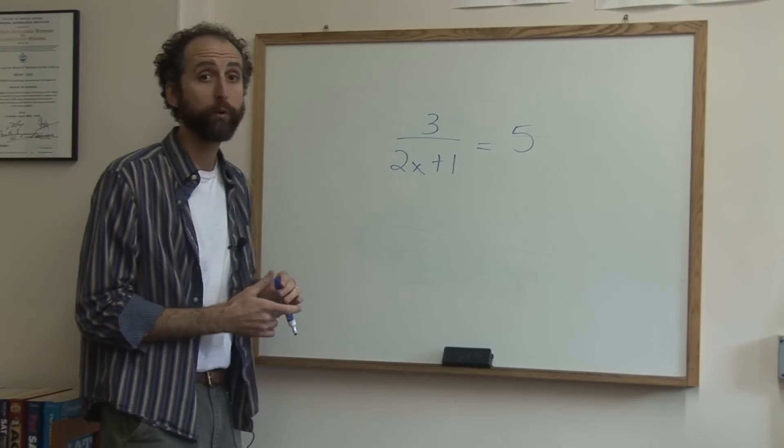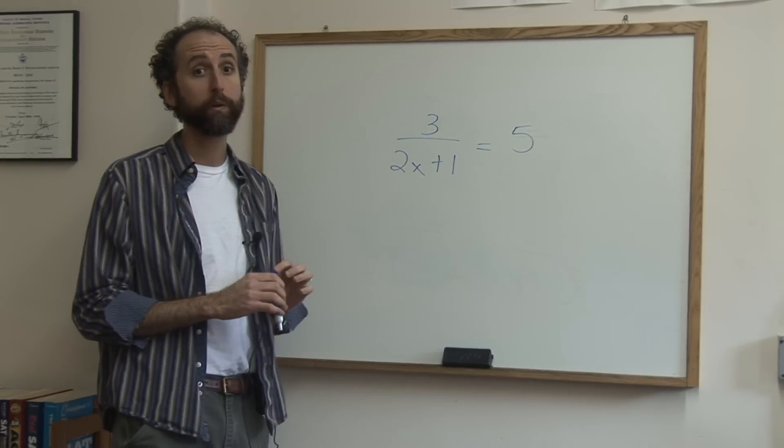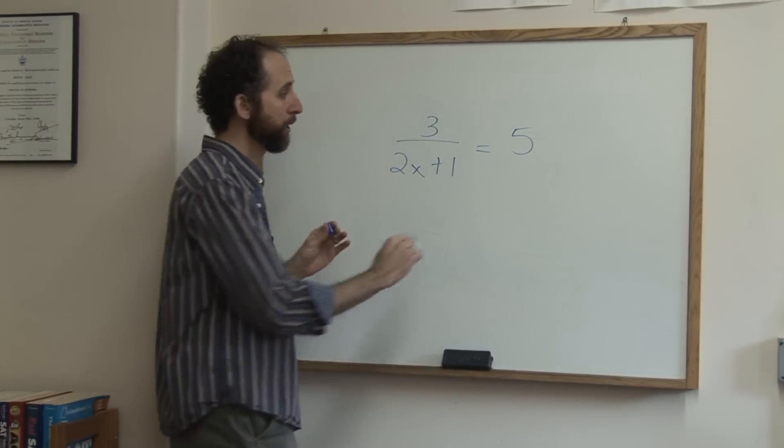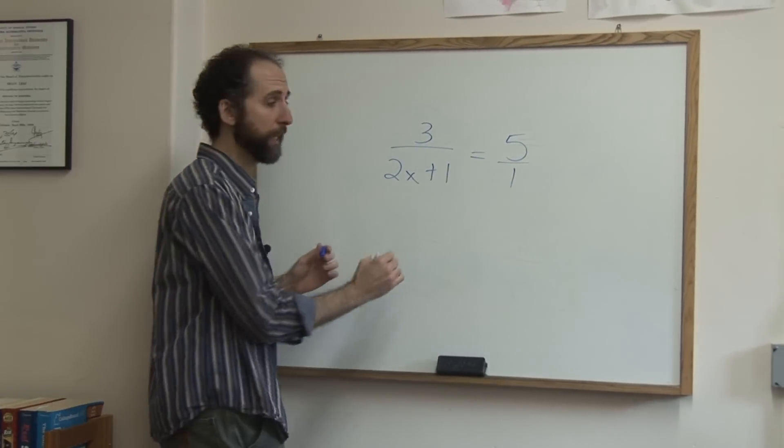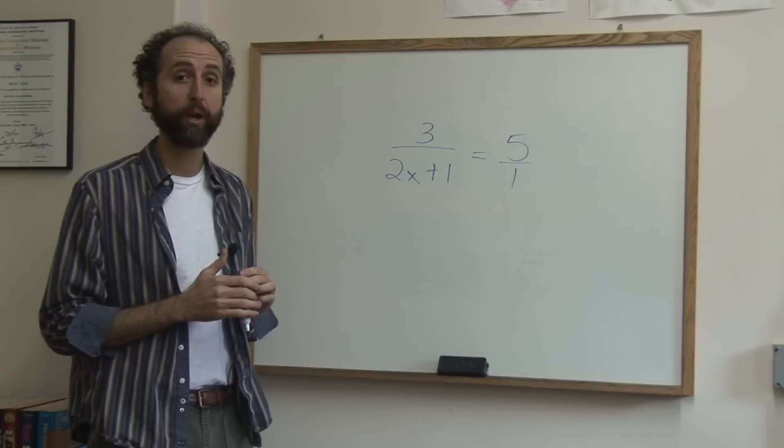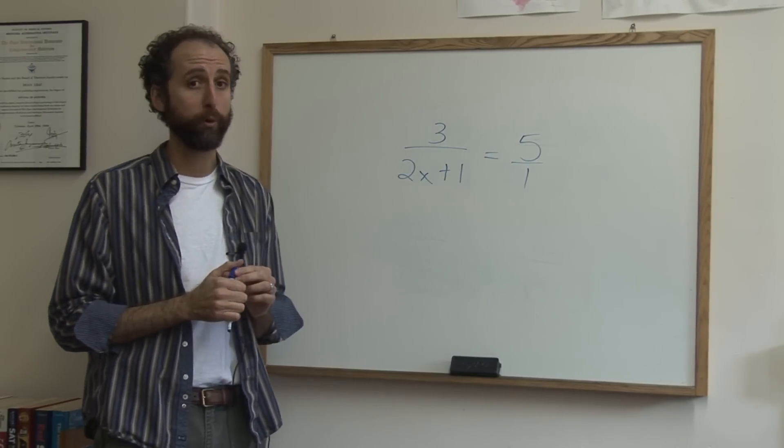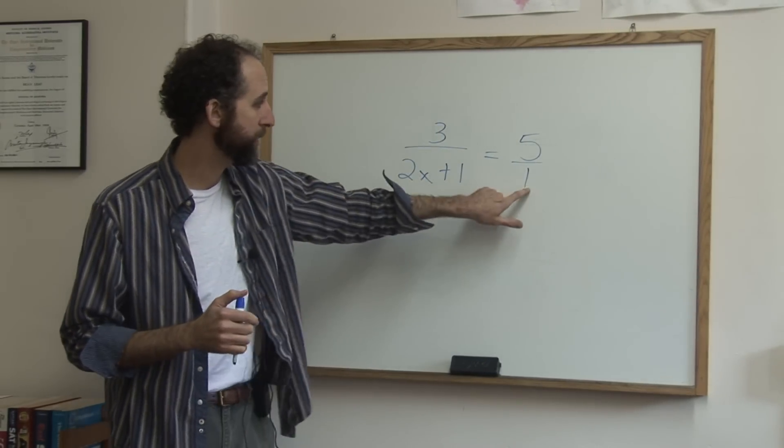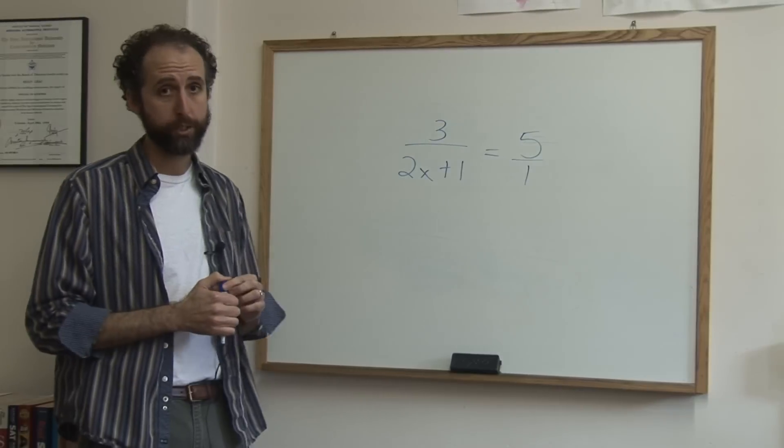Now if we want to solve this rational equation, the one I wrote on the board is actually pretty easy because all we're going to do is put a 1 under the 5 and then cross multiply. If you need a review on cross multiplying, just check back on the other clip for cross multiplying a proportion. You would just multiply this times this, that times that, and solve.